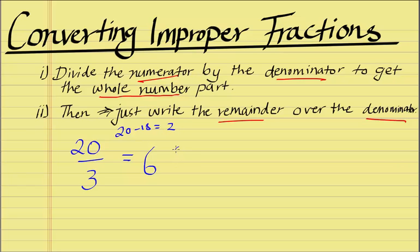So we write the remainder over the fraction part. And then we keep our original denominator, 3. Therefore, 6 and 2 thirds is our improper fraction. This is going backwards.